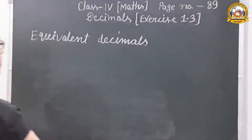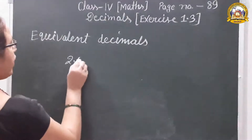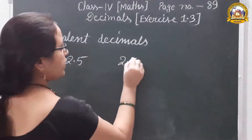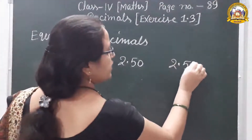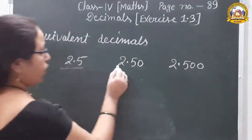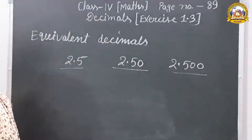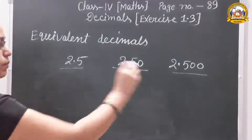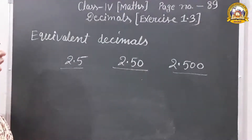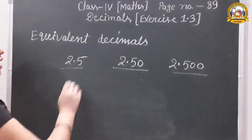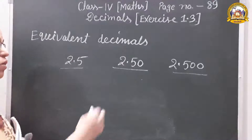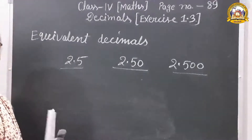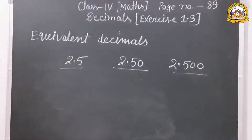Suppose another decimal number 2.5, then 2.50, and third number 2.500. All these decimal numbers are equivalent decimals. We can put as many zeros as needed at the end according to the situation, and it will have no effect on the decimal number's value. That is called equivalent decimal.